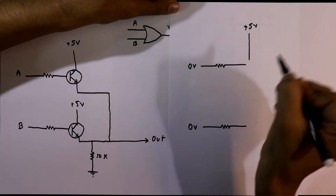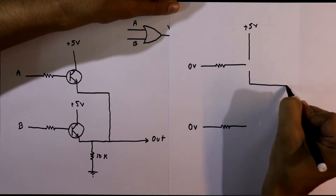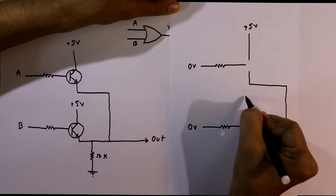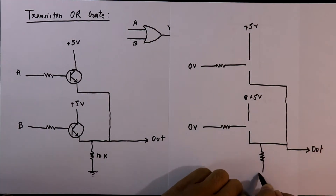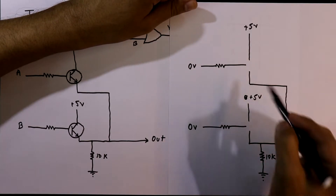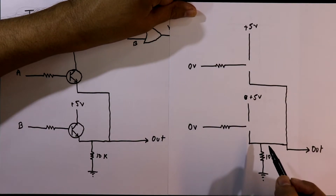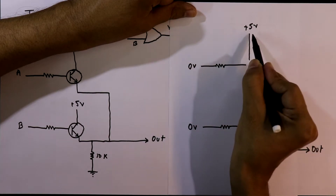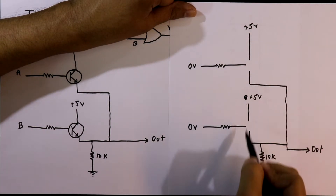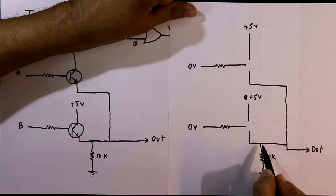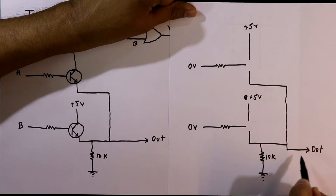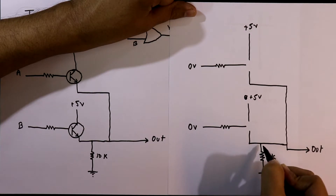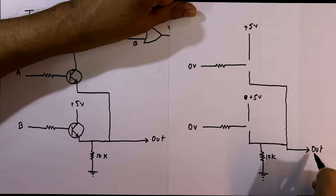We have applied plus 5V to the collector, but 0V to the base, so this transistor is also working as an open circuit. As both transistors are working as open circuits, the 5V is disconnected from the output. A pull-down resistor is connected to the output, so we are getting 0 at this point. So for this condition we are getting 0 in the output.